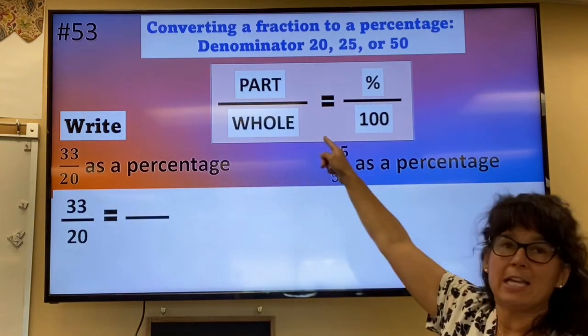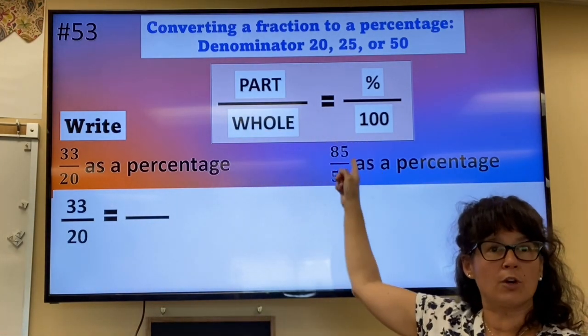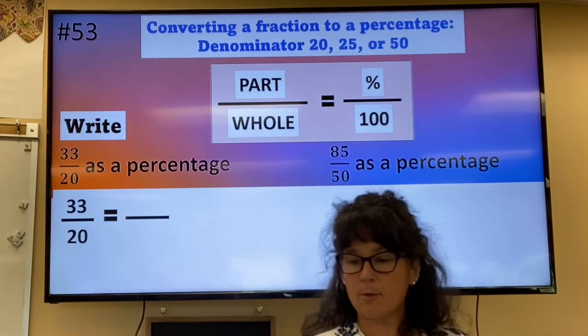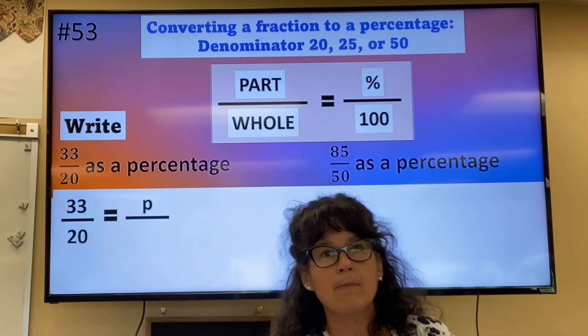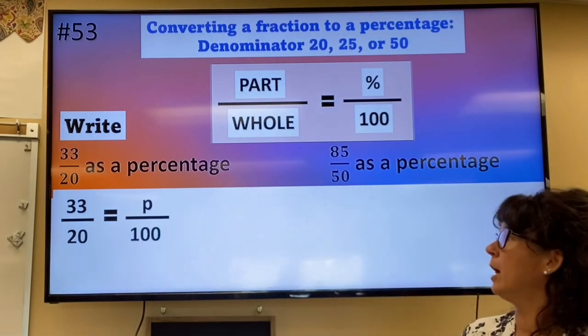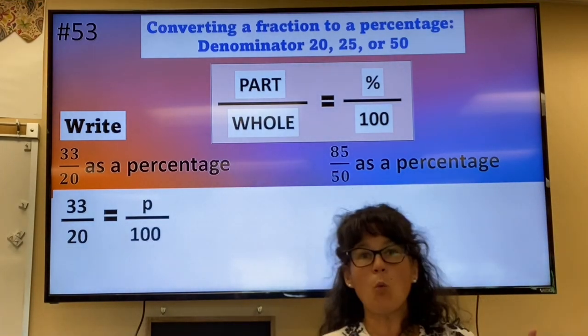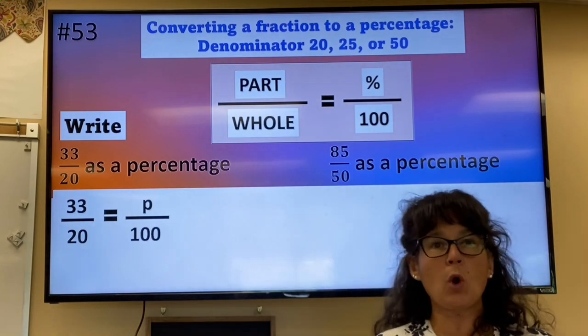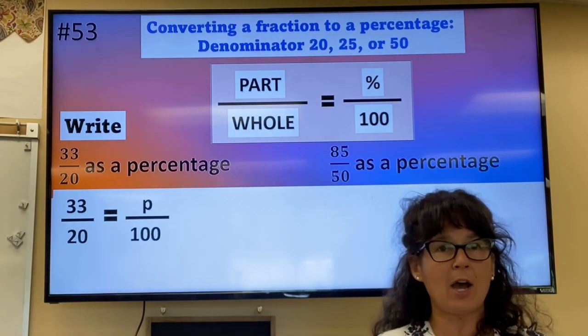And you always set that equal to percent over 100. We don't know the percentage, so that's going to be a variable. And then it's over 100. As soon as you have one fraction equal to one fraction, you just need to cross multiply, then divide.